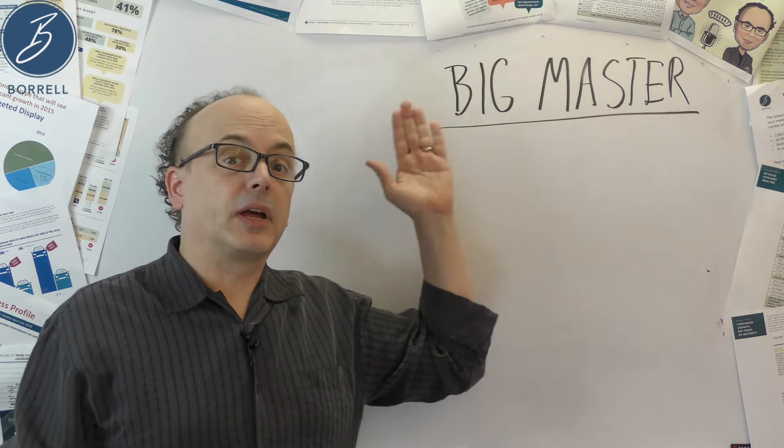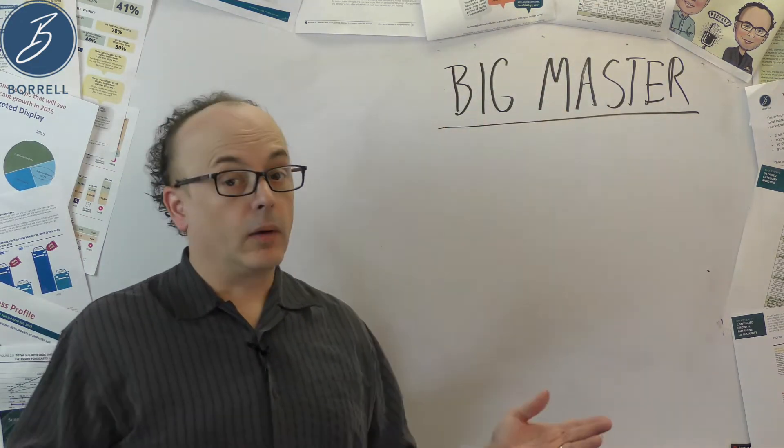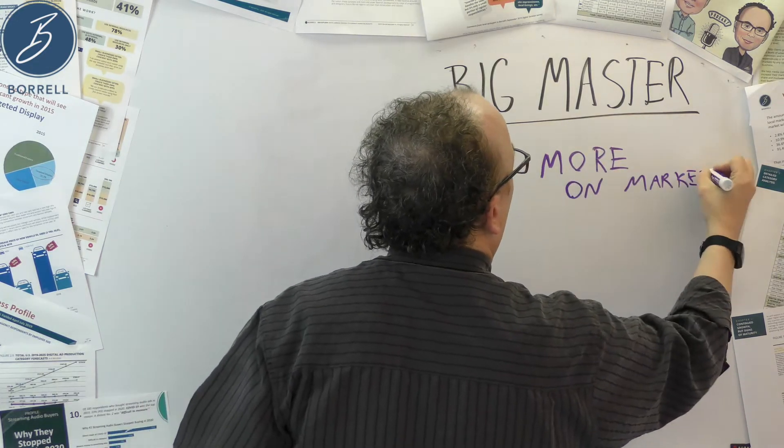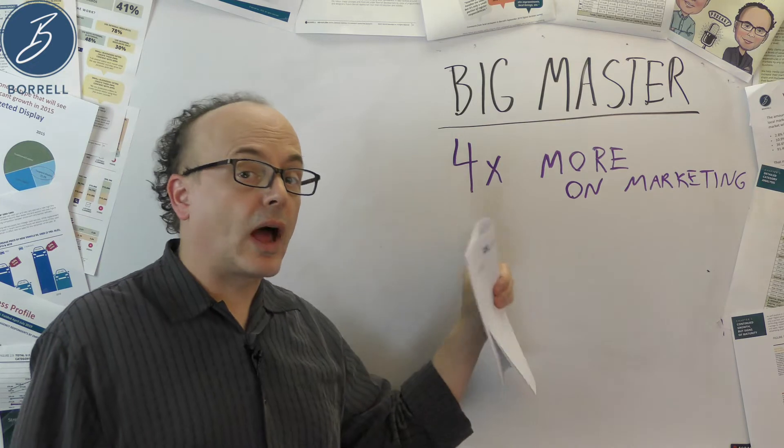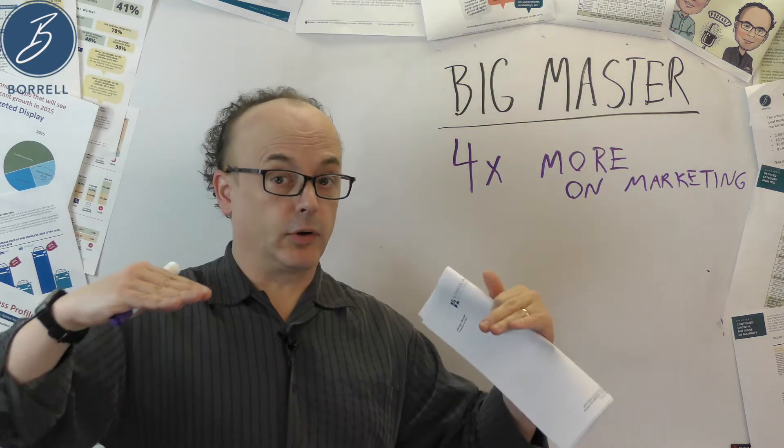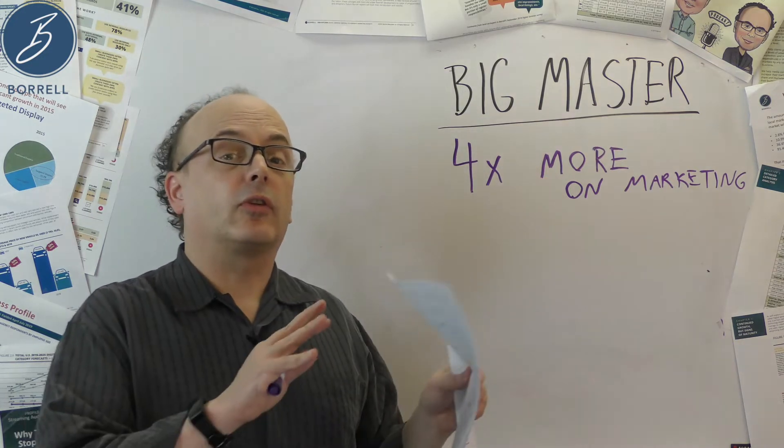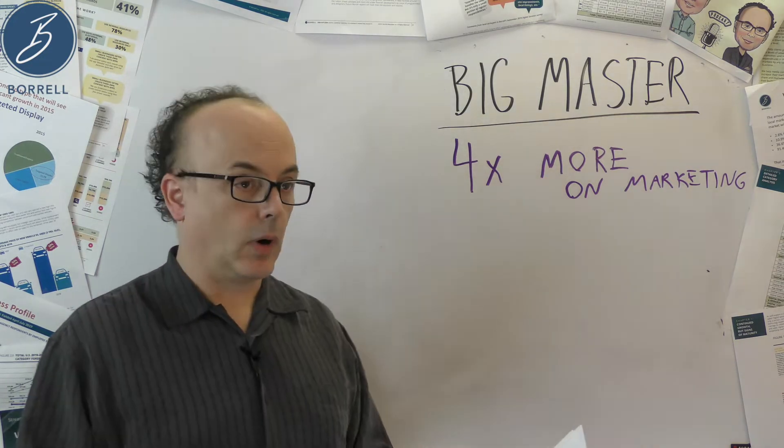So what are the master marketers at big companies doing differently? Well, to begin with, they are spending more on marketing. How many times more? On average, these guys are spending four times more on marketing. Now remember, they're in the same revenue bracket. But these guys are quadrupling the spend of the big novices. You should see the spending difference on particular media.